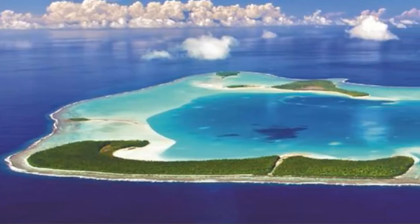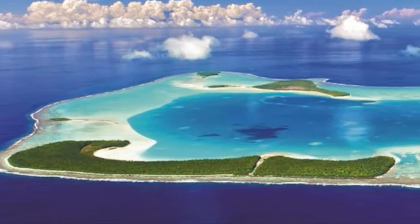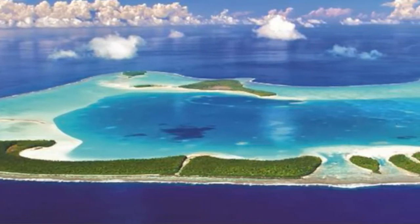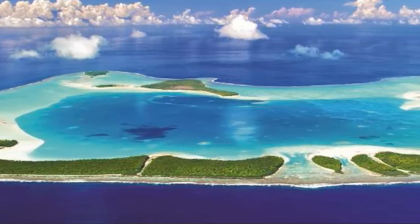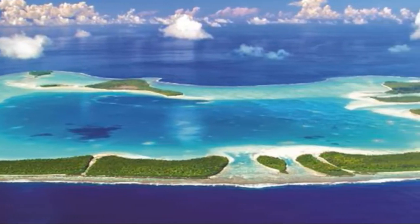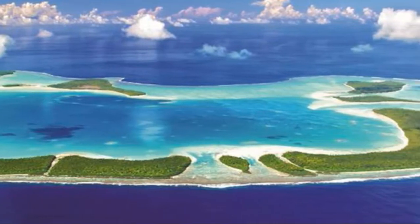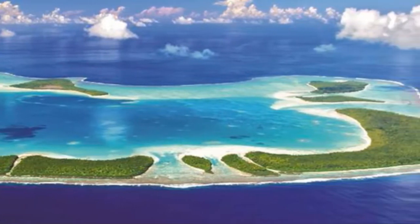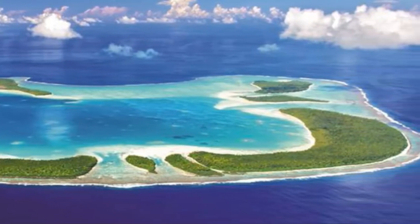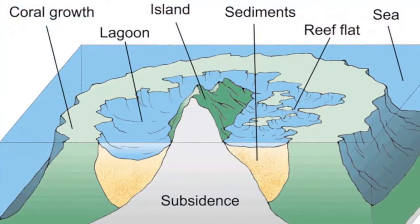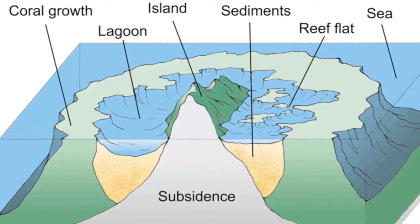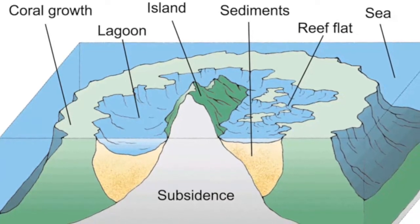What is a coral atoll, and what was Charles Darwin's hypothesis on the origin of atolls? Coral atolls are ring-shaped structures that often extend several thousand meters below sea level. What causes atolls to form, and how do they attain such a great thickness?